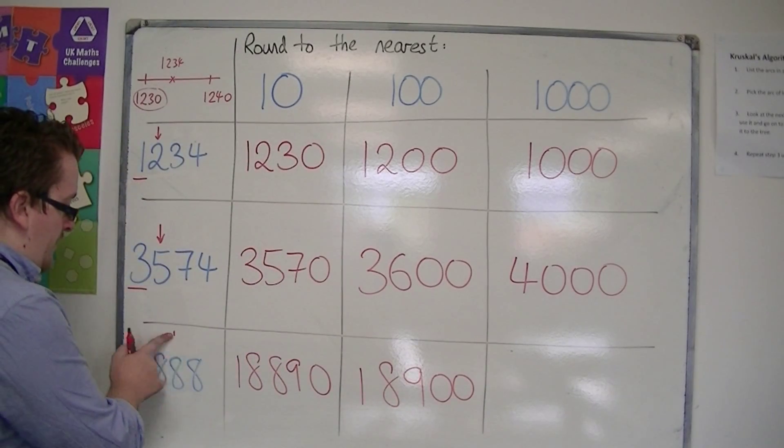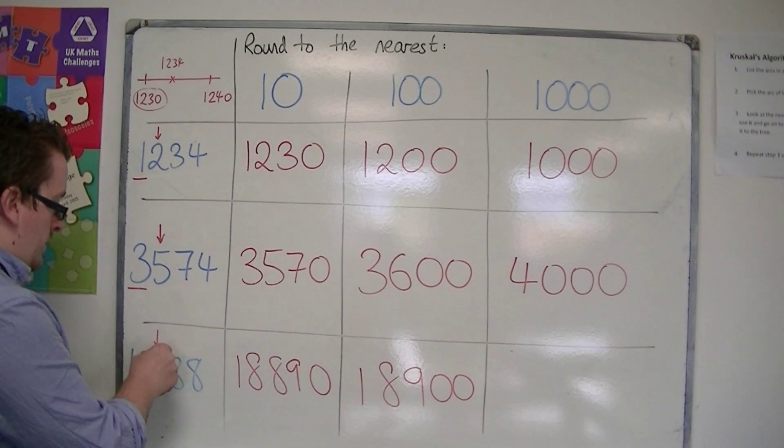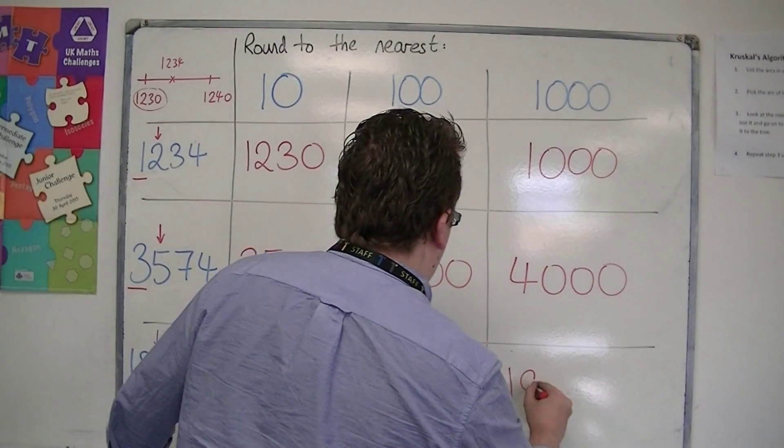We look at one to the left, okay, to the thousands column. The number to the right is an 8, so I round up to 19,000.